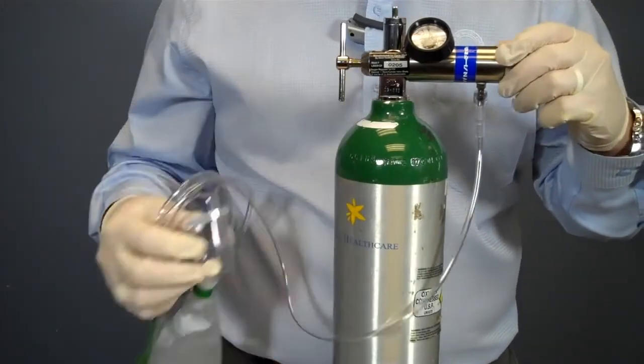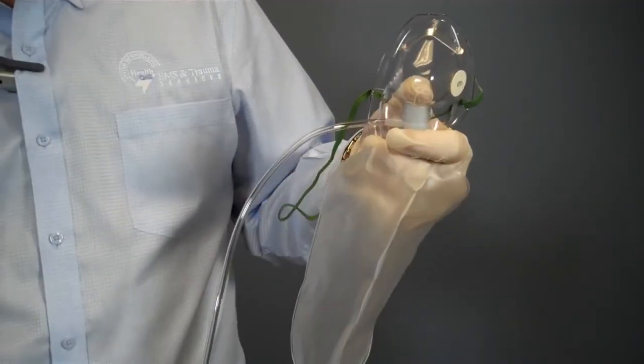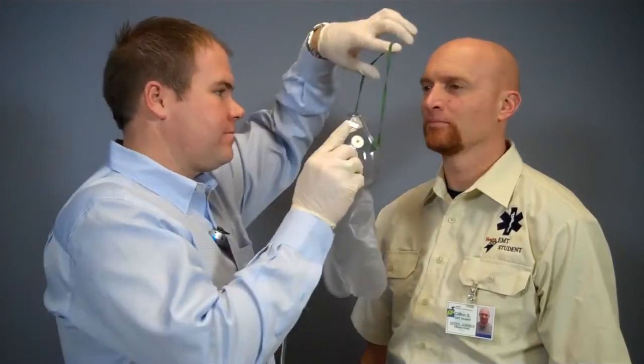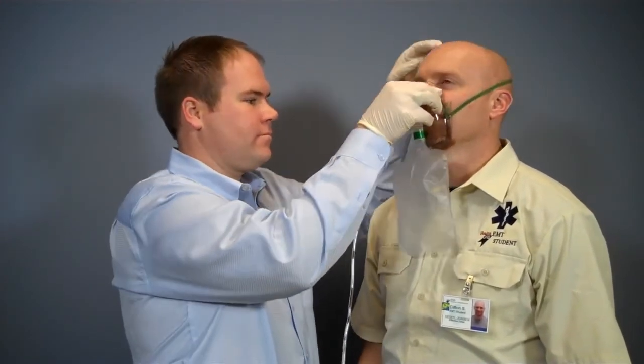I will now adjust the flow to between 10 and 15 liters per minute. Then I place my finger over the valve inside the mask to allow the reservoir to fill. I now place the mask over the patient's face and adjust the straps around their head.